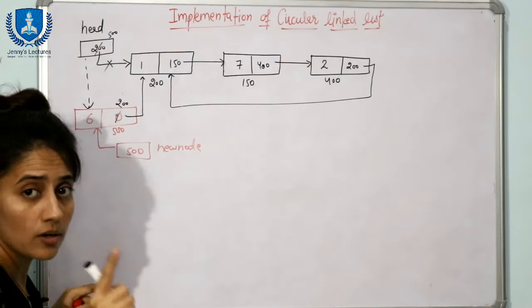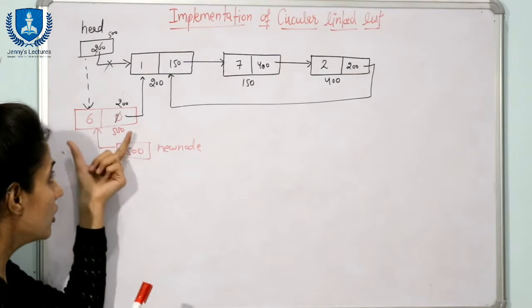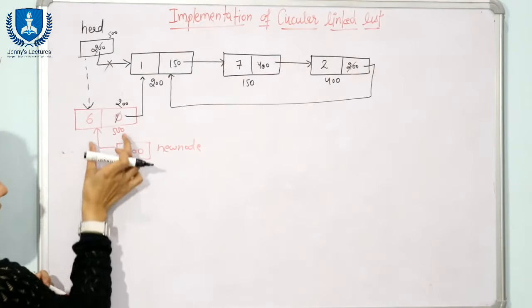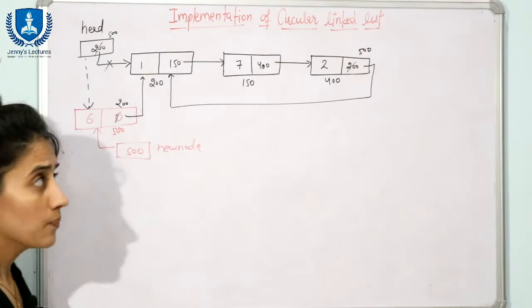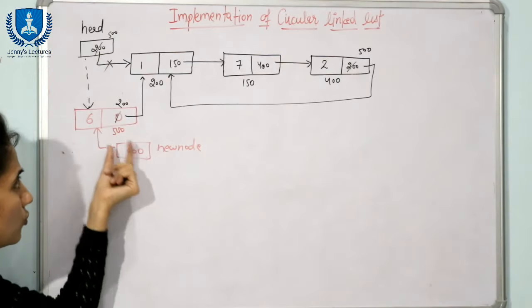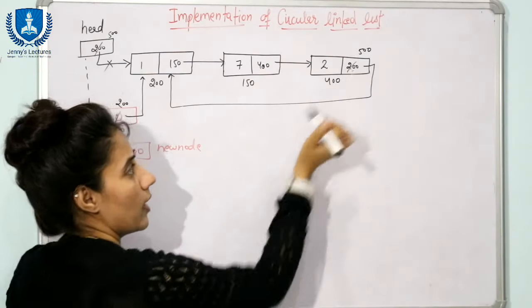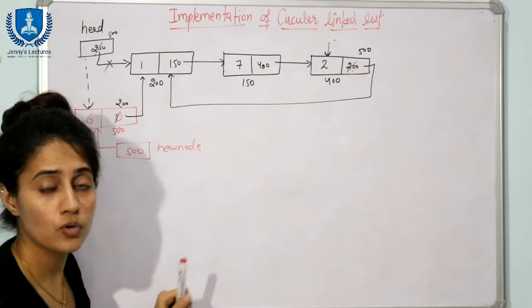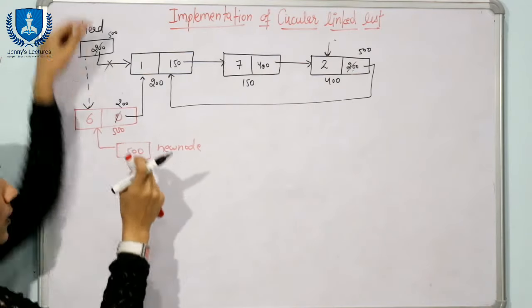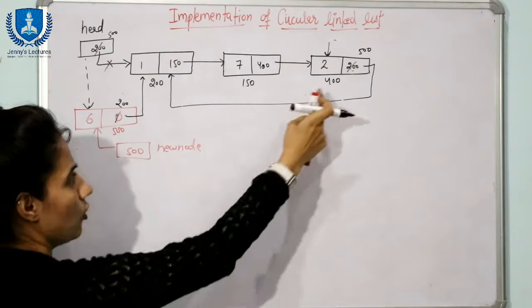Third, you have to update the last node. In a circular linked list, the last node contains the address of the first node. After inserting the new node, this becomes the first node, so you store address 500 in the last node's pointer. You can easily access the new node using the new node pointer, but how do you access the last node? We have only two pointers — head pointing to the first node and new node pointing to the new node. We cannot reach the last node directly.